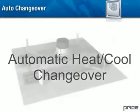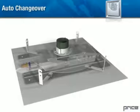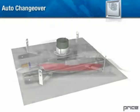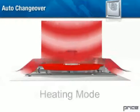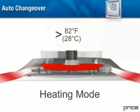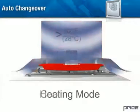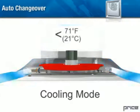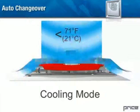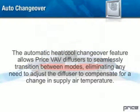Automatic heat-cool changeover: Price VAV diffuser models that offer both VAV heating and VAV cooling are equipped with an automatic heat-cool changeover device. This device senses the diffuser's inlet air temperature, activating the heating mode if the supply air temperature is above 82 degrees Fahrenheit or 28 degrees Celsius, and activating the cooling mode if the temperature is below 71 degrees Fahrenheit or 21 degrees Celsius. The automatic heat-cool changeover feature allows Price VAV diffusers to seamlessly transition between modes, eliminating any need to adjust the diffuser to compensate for a change in supply air temperature.